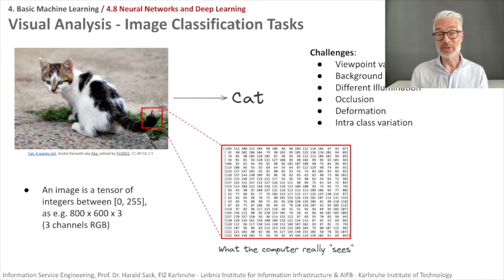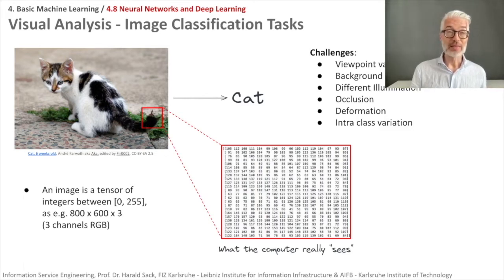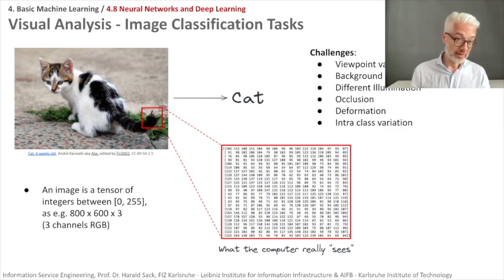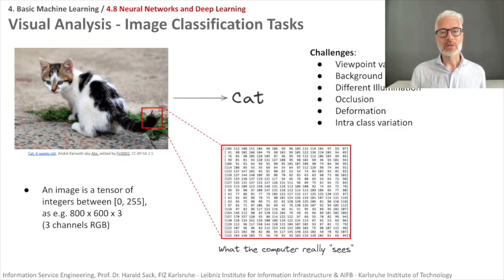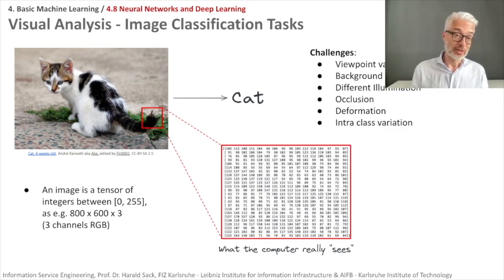Let's have a brief look at how image analysis is done — one of the most challenging tasks. Nowadays they work quite well because large trained networks using billions of pictures are available and can be adapted to specific problems. Imagine an image of a cat that has to be identified across viewpoint variations, background clutter, different illumination, occlusions, deformations because the cat is stretching, and lots of variations in appearance — cats can look completely different.